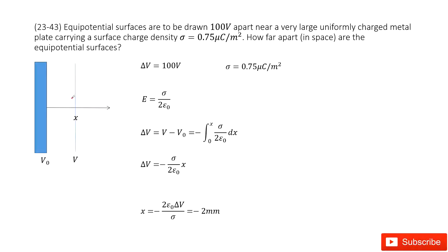So we look at this system. We know the equipotential surface to be drawn is 100V. And then for a very large uniformly charged metal plate, this is a conductor, so it's uniformly charged. The keyword metal means the charge uniformly distributed at the surface. The charge density is given. How far apart are the equipotential surfaces?